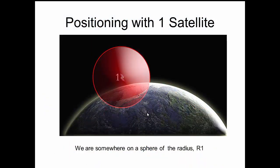Let's consider what happens if we were only using one satellite. When we get a distance from the satellite, that doesn't tell us much other than we are somewhere on a sphere of that radius R1, that R1 radius being the distance back to that satellite.